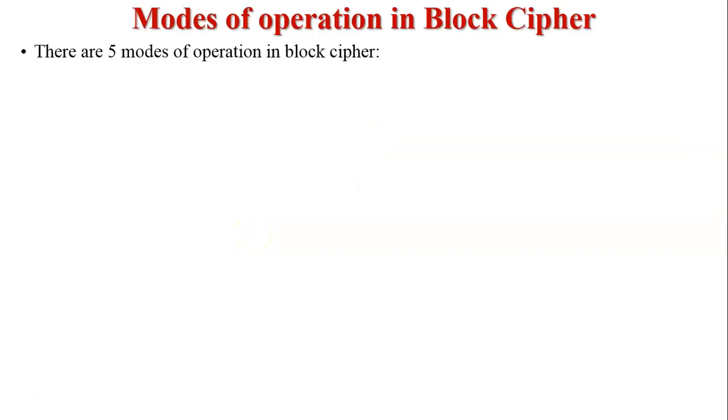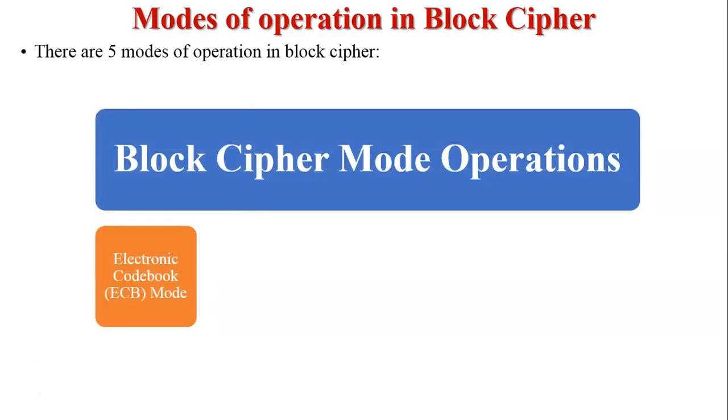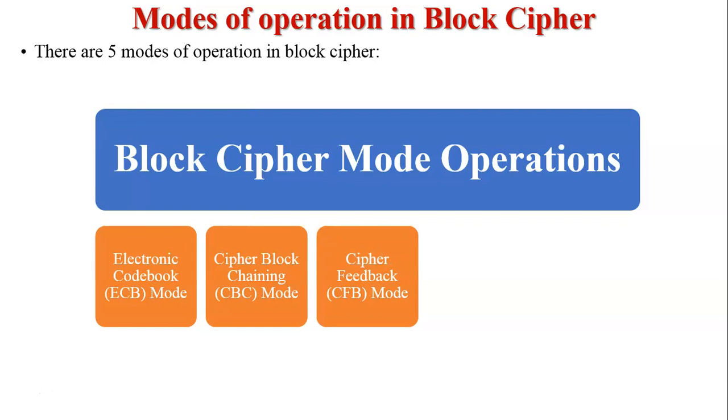There are five modes of operation in block cipher. First one is electronic code book mode. Second one, cipher block chaining mode. Third one, cipher feedback mode. Fourth one, output feedback mode. And fifth one, counter mode.